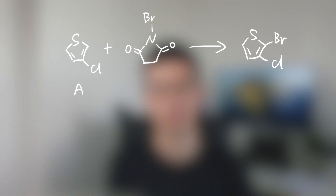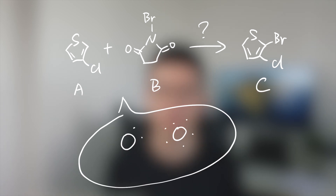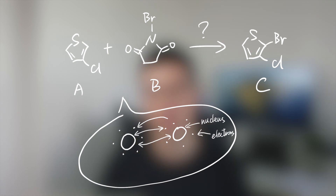People have been thinking about using computers to simulate the whole process. But how? First, we have to go down to the microscopic world, because all matter in our life — including you and me — is composed of smaller building blocks such as atoms and molecules. If you finished high school, you know that atoms are composed of nuclei and electrons. If we want to know whether molecule A and molecule B can react to produce molecule C, we have to calculate interactions between nuclei and nuclei, nuclei and electrons, and electrons and electrons.